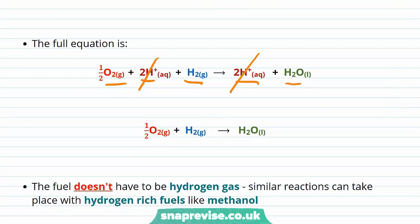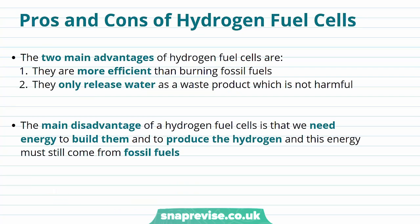As with the alkaline fuel cells, the fuel doesn't have to be hydrogen gas. We can have similar reactions take place with hydrogen-rich fuels, like methanol. Now we know how hydrogen fuel cells work, we need to think about the advantages and disadvantages of them. The main advantages of hydrogen fuel cells, and the reason why they're becoming more popular, is that they're more efficient than burning fossil fuels. Also, they only release water as a waste product into the environment, which is not harmful compared to carbon dioxide, which is.